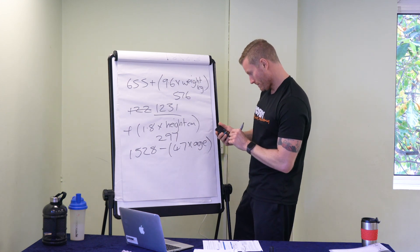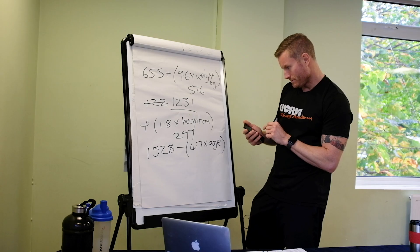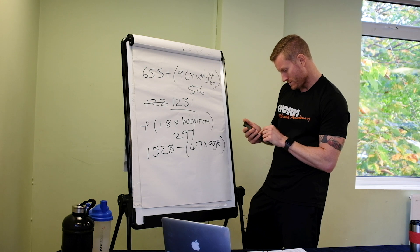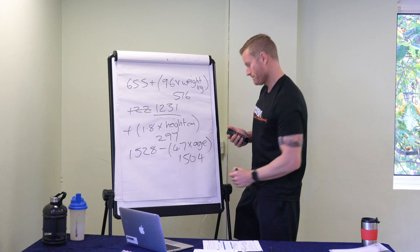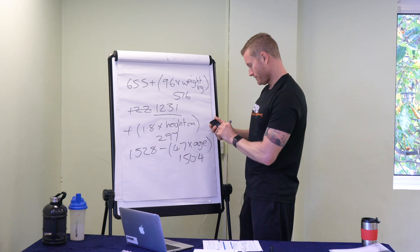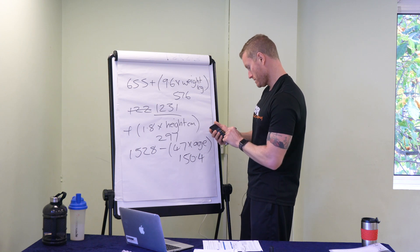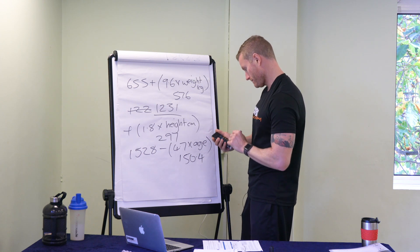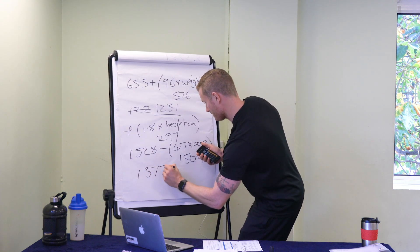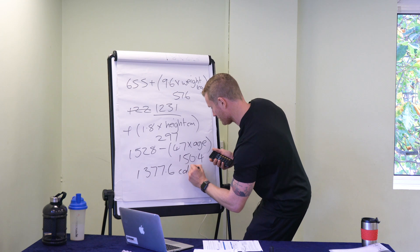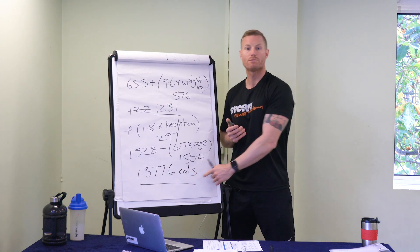So let's do 4.7, what did I say 32? 4.7 times 32 equals 150.4. So now we've got to take that off, 1,528 minus 150.4 equals 1,377.6 calories. That is Jennifer Lawrence's basal metabolic rate.